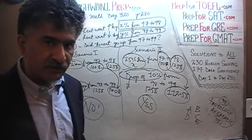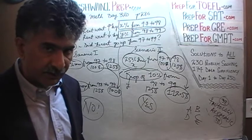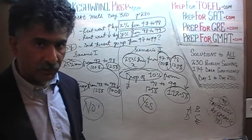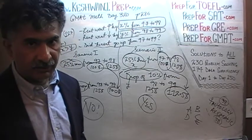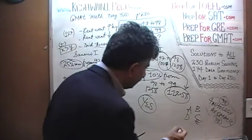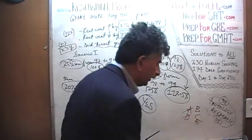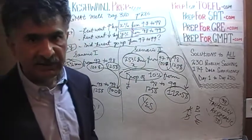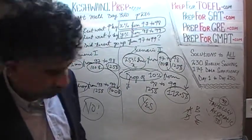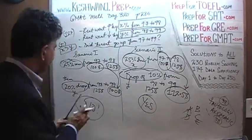Now that we have established that the first statement by itself is not enough, we know the answer cannot be A or D. It will have to be either B, C, or E. Let's look at the second statement.